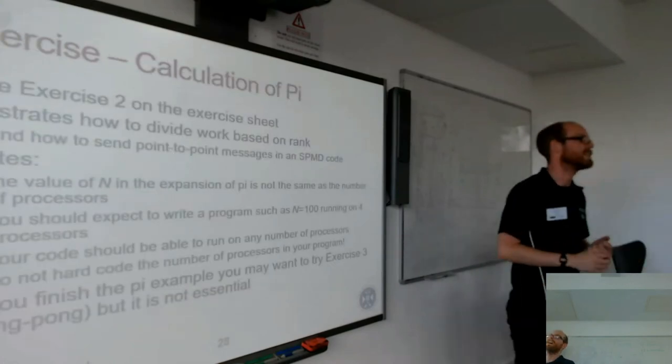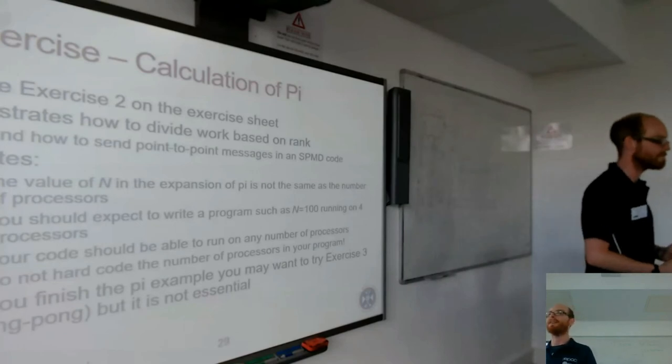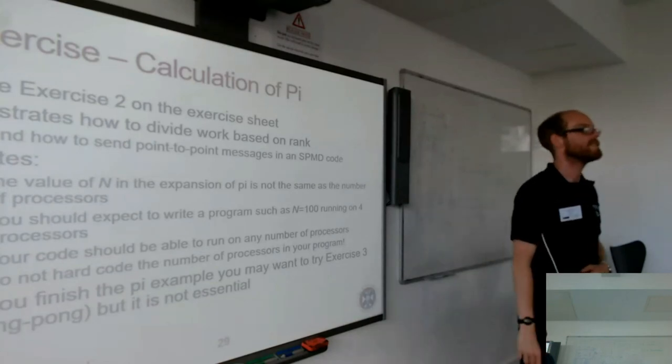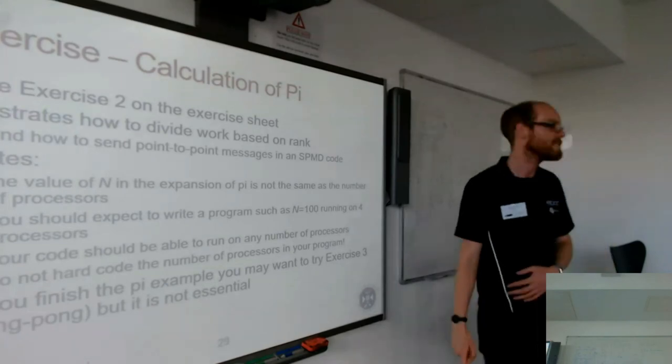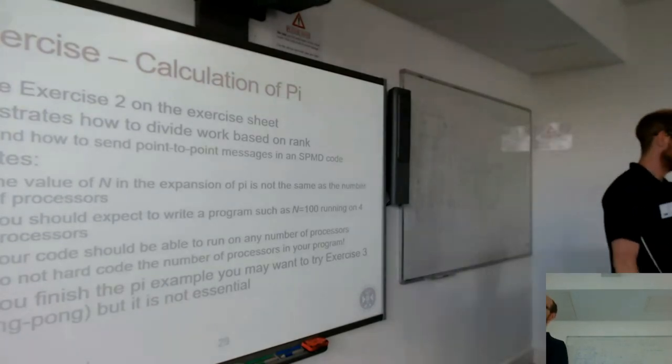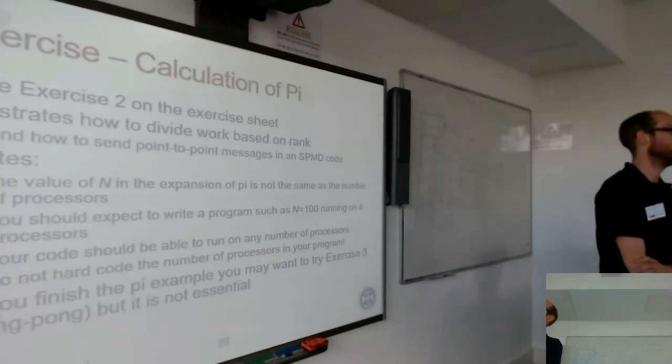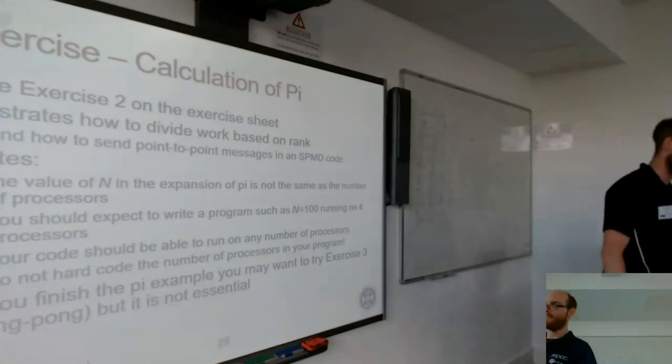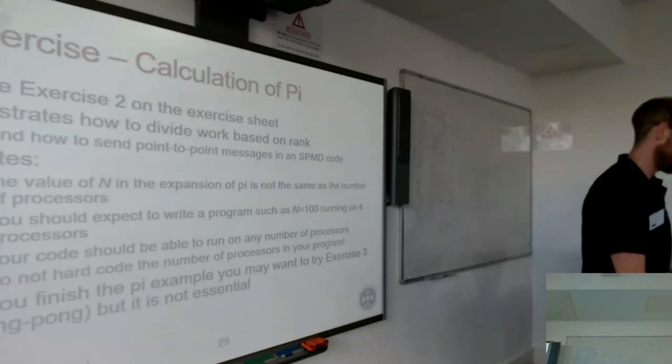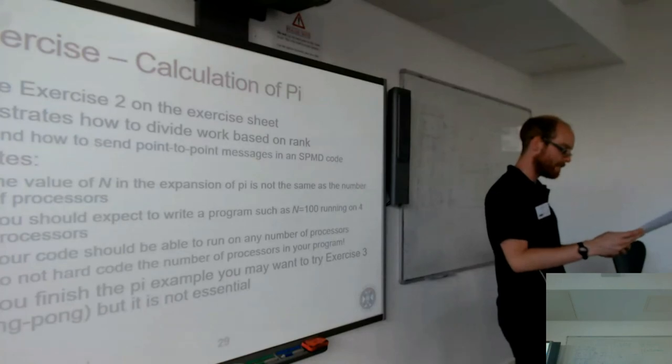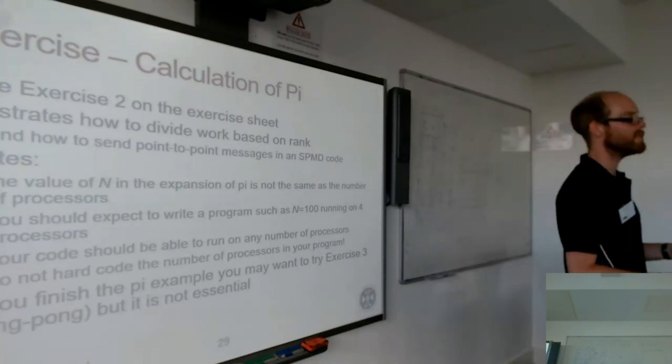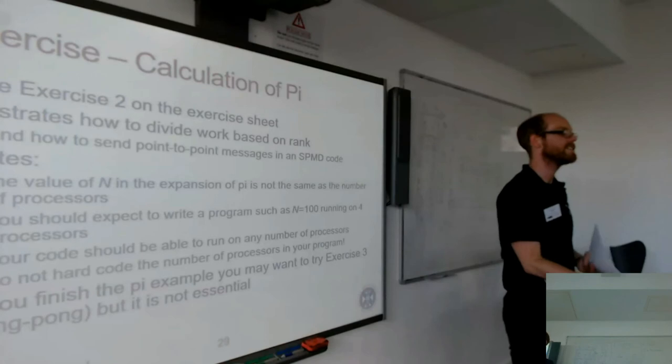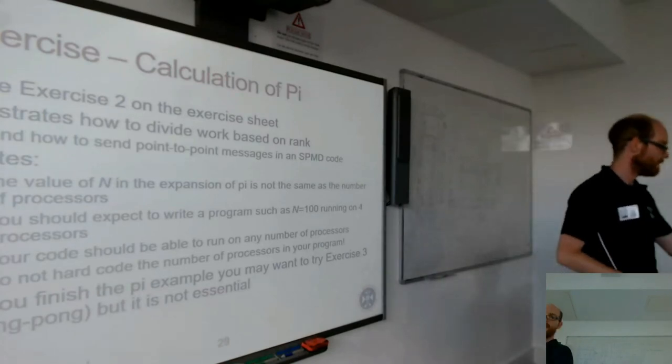Okay, so now you'll be starting an exercise which has some communications, which calculates pi. It's basically how to divide your work up based on the rank of your process, and you're sending messages as well. Just some notes that you can read on the worksheet: the N that's being used in the example is talking about the number of iterations that you use, not the number of processes. And in theory, this code should be able to run any number of processes that you want.